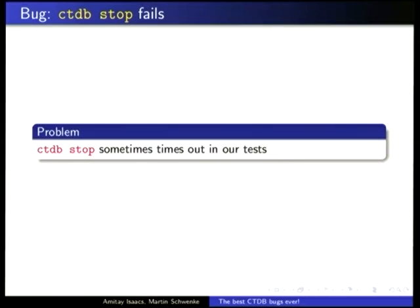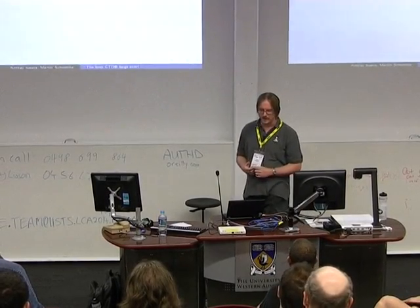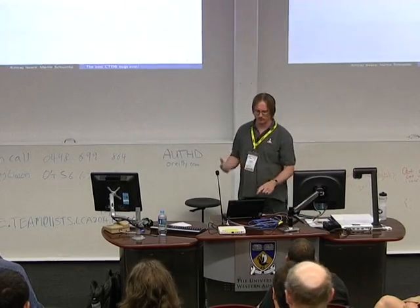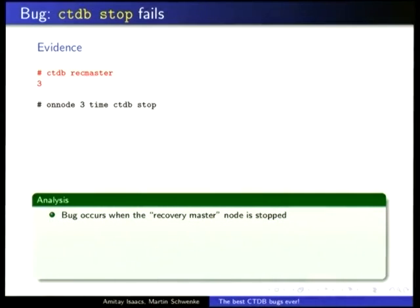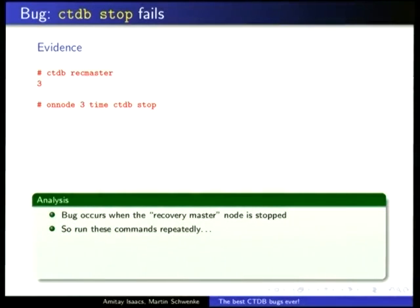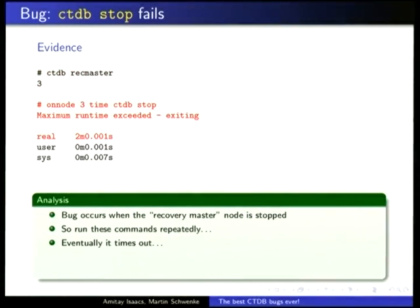Now I'm the crazy bug guy. CTDB stop is a command that administratively takes a node out of the cluster and makes it inactive. We would just see the CTDB stop command time out in our nightly tests. We can run a really simple test: there's a special node called the recovery master — in this case node three. We do CTDB stop on node three. To tickle the bug, we run these in a loop with a CTDB continue. After about 10 or 20 iterations, we hit the bug — we get a timeout.